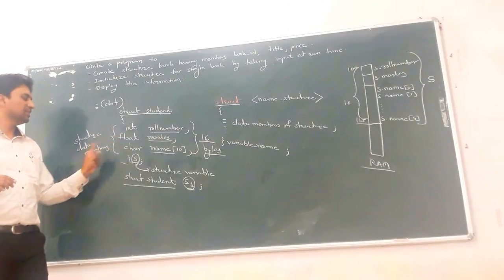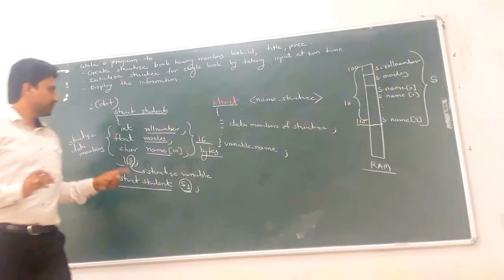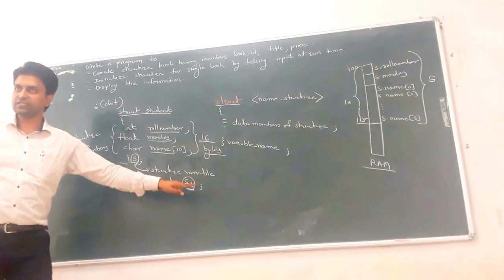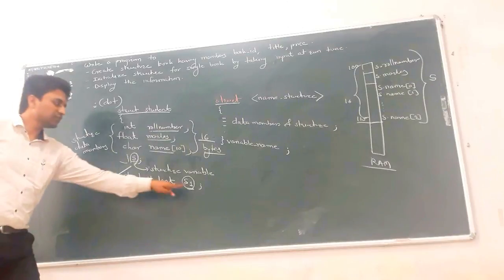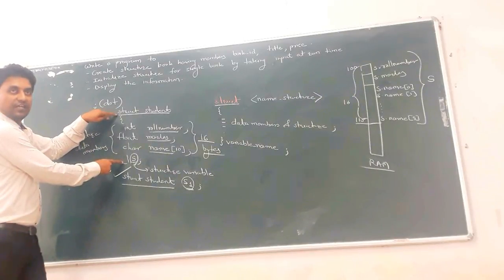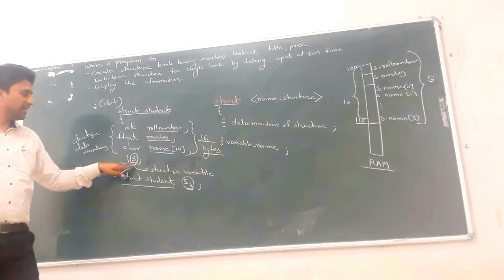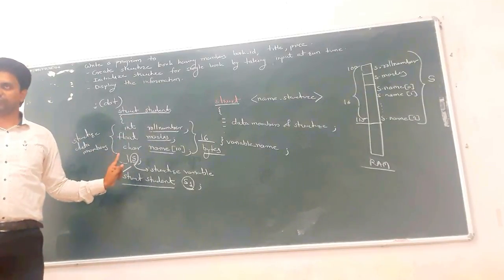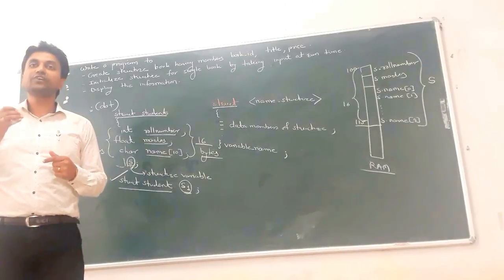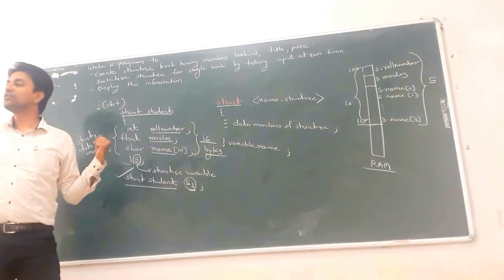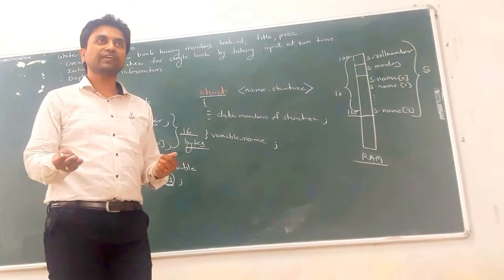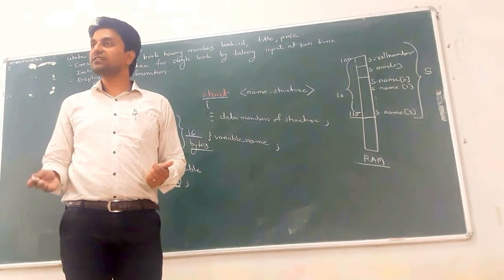So roll number, marks, and name are the three structure data members, and S and S1 are called structure variables. This is called structure declaration and structure variable declaration. There are two ways to initialize the structure variable — that is, to assign values to it. One is at compile time, and the other is at run time, where you take values from the user.